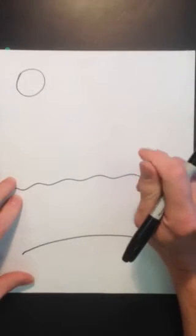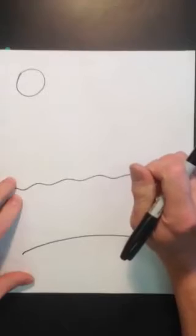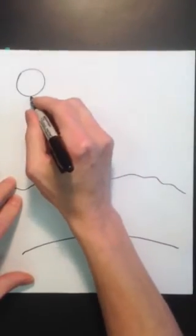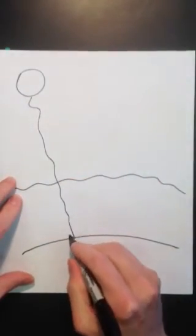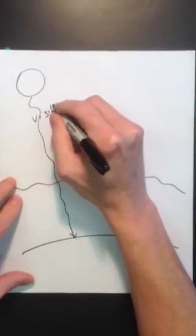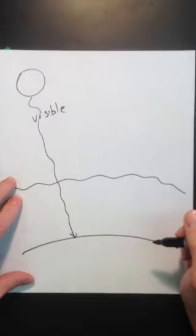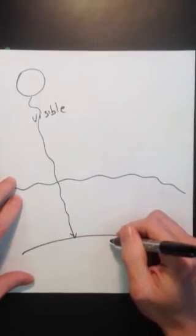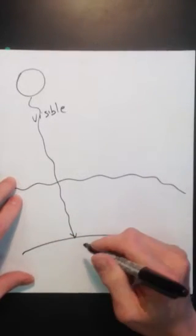But there's one kind of light that comes through, and that's the shortwave visible light. It comes all the way through the atmosphere, and it's absorbed by the Earth, and the Earth then gets hot.